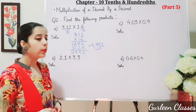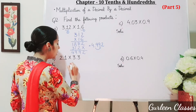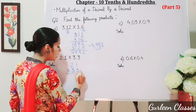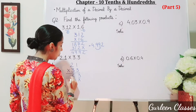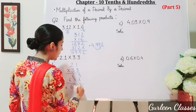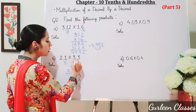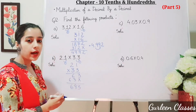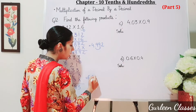Now part b: 2.1 into 3.3. First, ignore the decimal points. So multiply 21 into 33. 3 ones are 3, 3 twos are 6, 3 ones are 3, 3 twos are 6. So the answer is coming 693. Here after the decimal point only 1 digit is there, and here also 1 digit. 1 plus 1 is 2. So from the right we will count 1, 2. So the answer is 6.93.